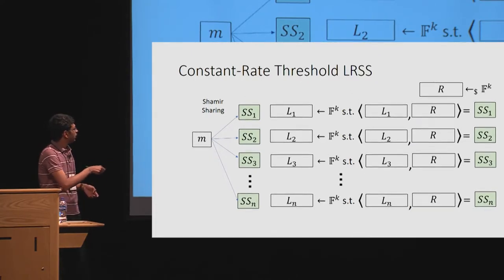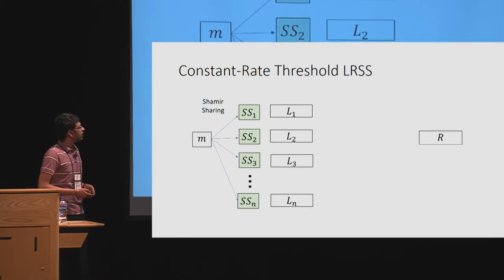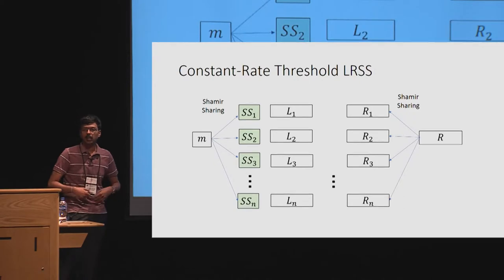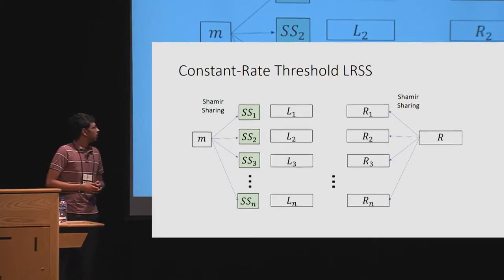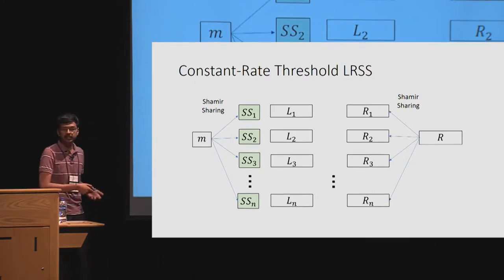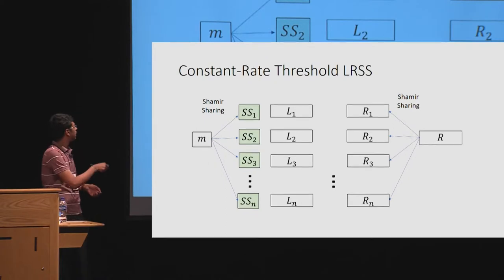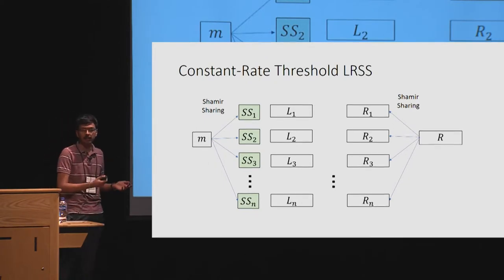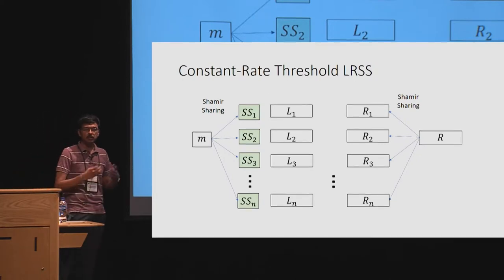So you choose L1 through Ln such that the inner product with R gives the corresponding Shamir shares SSi, obtaining L1 to Ln as the second step. The final step is to take this vector R and split it into n shares R1 to Rn using Shamir's secret sharing over F^k. The share for the i-th party is the pair (Li, Ri). To reconstruct, given any T shares, use Shamir to reconstruct R, take inner products with the Li's to get T Shamir shares of M, and use Shamir reconstruction again to get the secret.